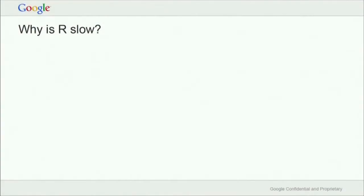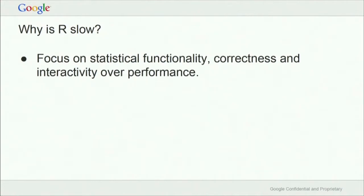To make R fast, we need to understand why it's slow. The first and probably most important reason is that R Core has very rightly focused on things that make R useful — a powerful tool for doing statistics. That's absolutely the right thing for them to do. But as a result, performance has suffered.